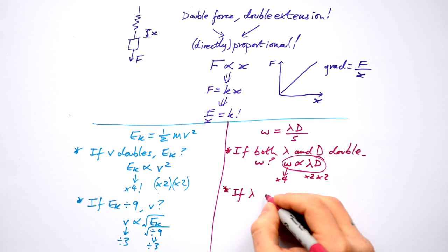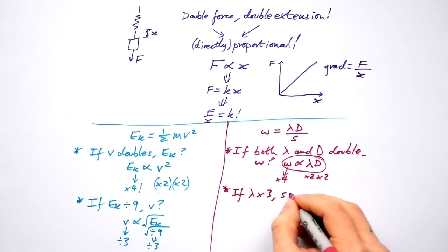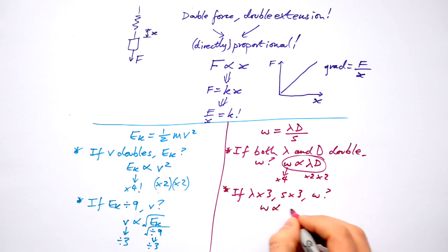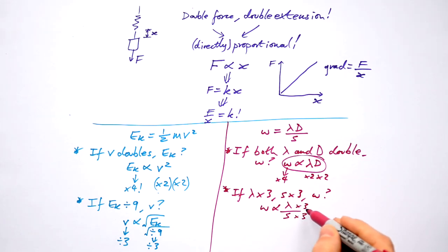What about if I said if the wavelength triples but so does the slit separation? What happens to the fringe spacing? Well again I need w is proportional to lambda over s in this case. I don't care about d because that's staying the same. What do we have? Times three times three. But look this times three is actually on the bottom. So in fact it's divided by three. They cancel out. W stays the same.